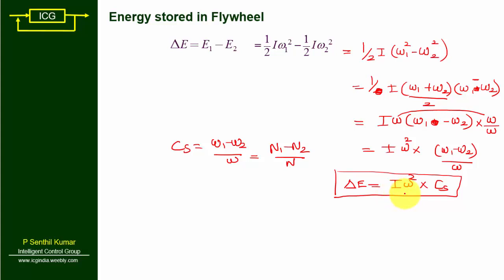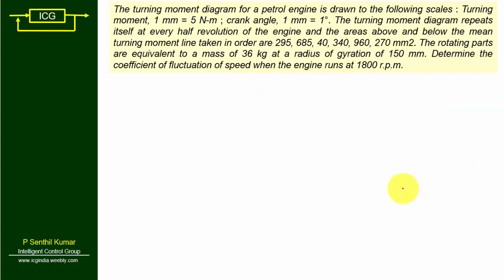Here I represents moment of inertia, omega represents the speed of the flywheel, and Cs represents the coefficient of fluctuation of speed. Now let us solve a simple problem related to the turning moment diagram of a steam engine. The turning moment diagram of a petrol engine is given where 1 mm equals 5 Nm and 1 mm equals 1 degree. The turning moment diagram repeats itself at every half revolution — this indicates the problem is in the steam engine format.